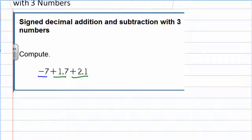So it's probably going to be easier for us to group them together that way to get started. If we put those positive ones together, we have 1.7 and 2.1. Those are both positives so they're being added.